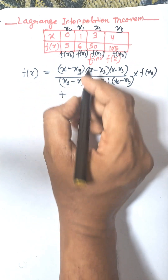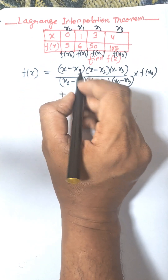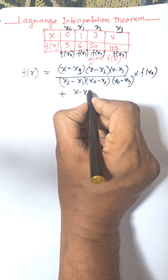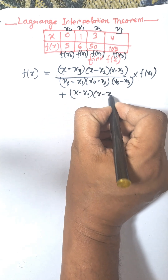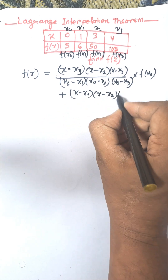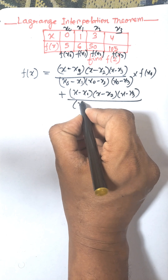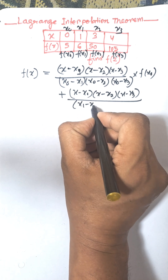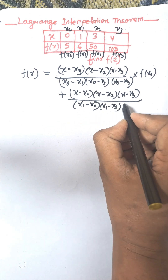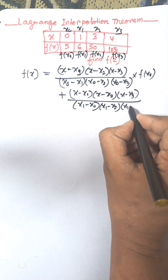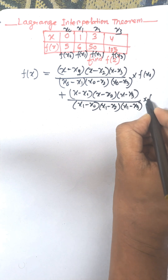Then plus, when we remove x1, the formula will be x minus x0, x1 minus x2, x1 minus x3, divided by x1 minus x0, x1 minus x2, x1 minus x3, into f(x1).